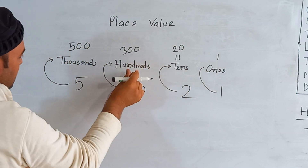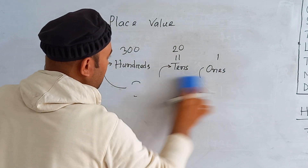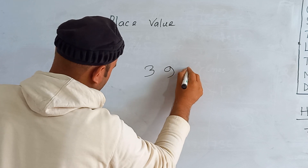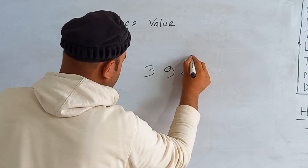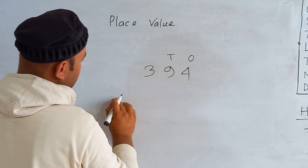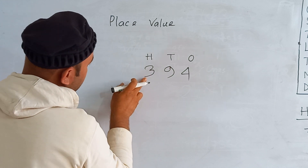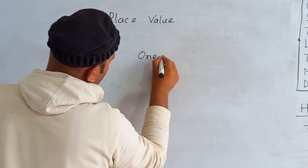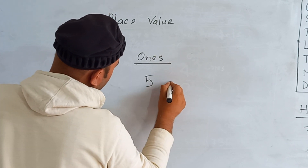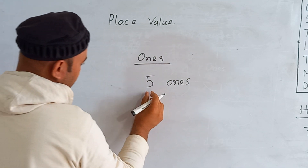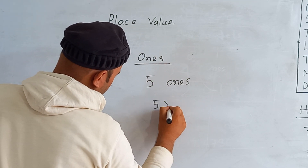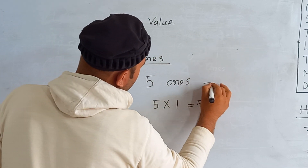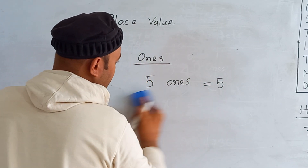So first of all there is ones place, tens place, hundreds place, and thousands place. For example, five ones means five multiplied by one, so five ones equals five.